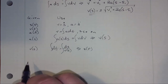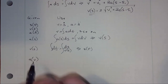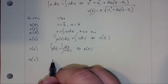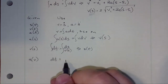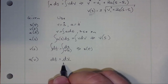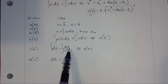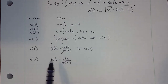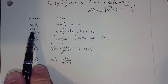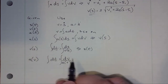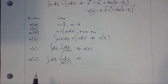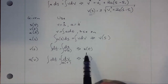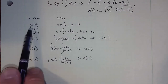Another case we can handle is acceleration as a function of velocity. There are certain situations where that's true, and again we go back and use the definition: dt equals dv over a. Notice that once I integrate both sides, I'll have time on one side and velocity on the other, and that will give me v(t). Once we have s(t) and v(t), we can always take derivatives and integrals to relate those two.